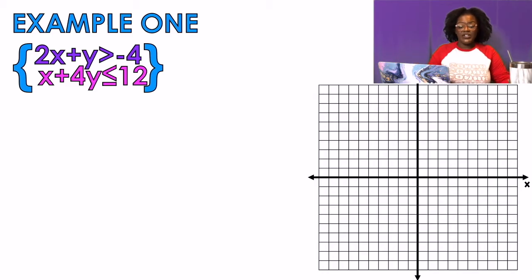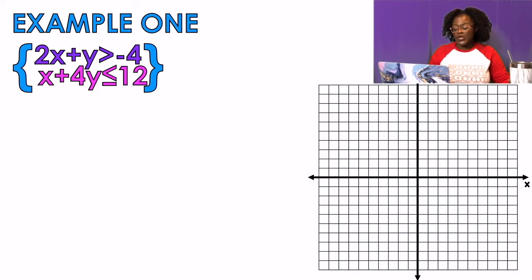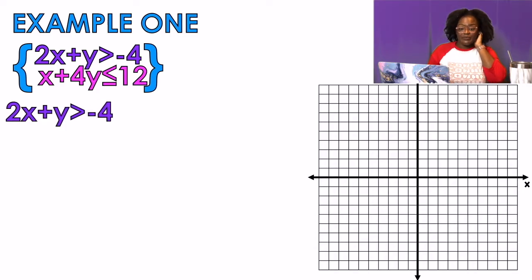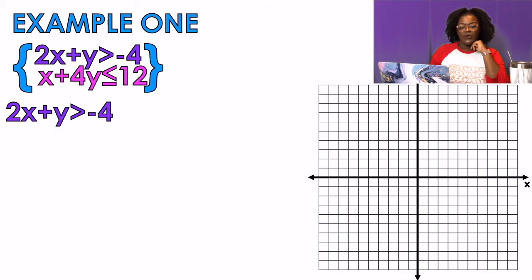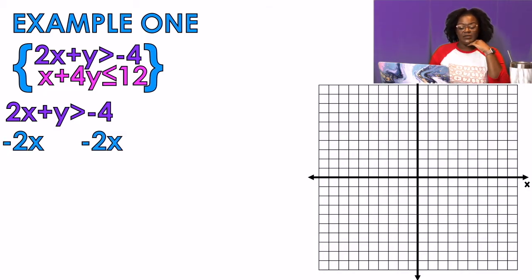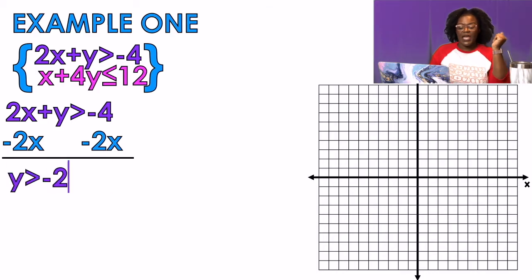Example one. If you watched my graphing systems of linear equations video, we're using the same examples except the symbols are changed to inequality symbols. I have 2x + y > -4. I'm going to isolate y by subtracting 2x from both sides, giving me y > -2x - 4.